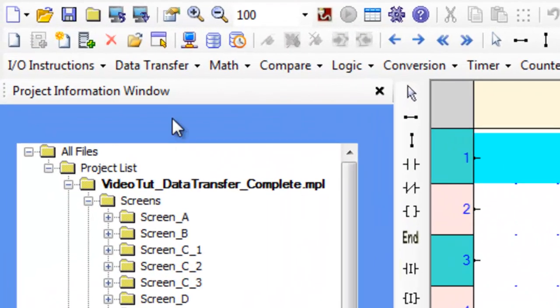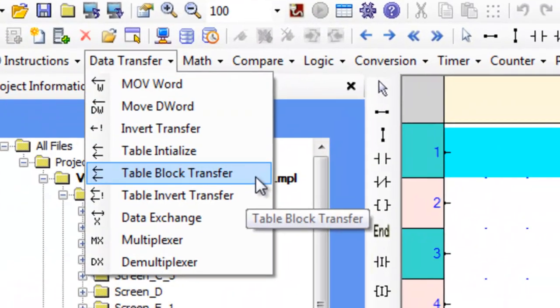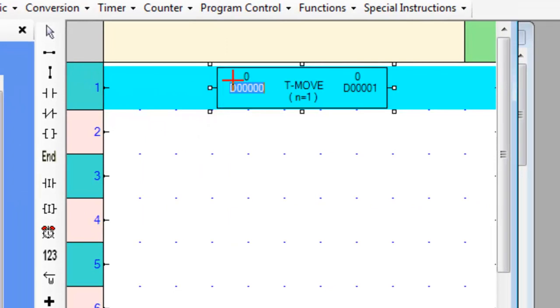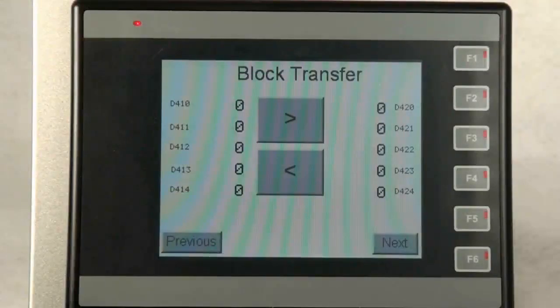Let's hover over the data transfer tab and place the block transfer instruction on rung number 1 of the logic block. Now that we know where the instruction is and what it looks like, let's go over to an HMC and initially demonstrate what we will be talking about.